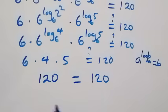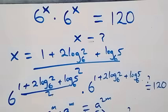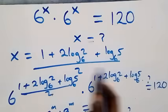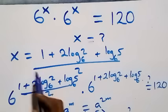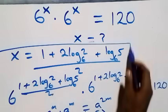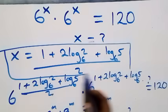Therefore, the left hand side equals the right hand side. Hence we conclude that x equals 1 plus 2 log₆2 plus log₆5, all over 2, satisfies the given problem.